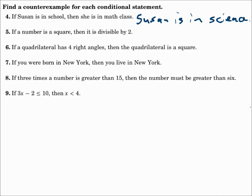Number five: if a number is a perfect square, then it's divisible by two. That's true sometimes — for example, 4 squared is 16, and 16 is divisible by two. But what about 9? Three squared equals 9. Is 9 divisible by two? No, it's not. That's your counterexample — it is a perfect square, but it's not divisible by two.